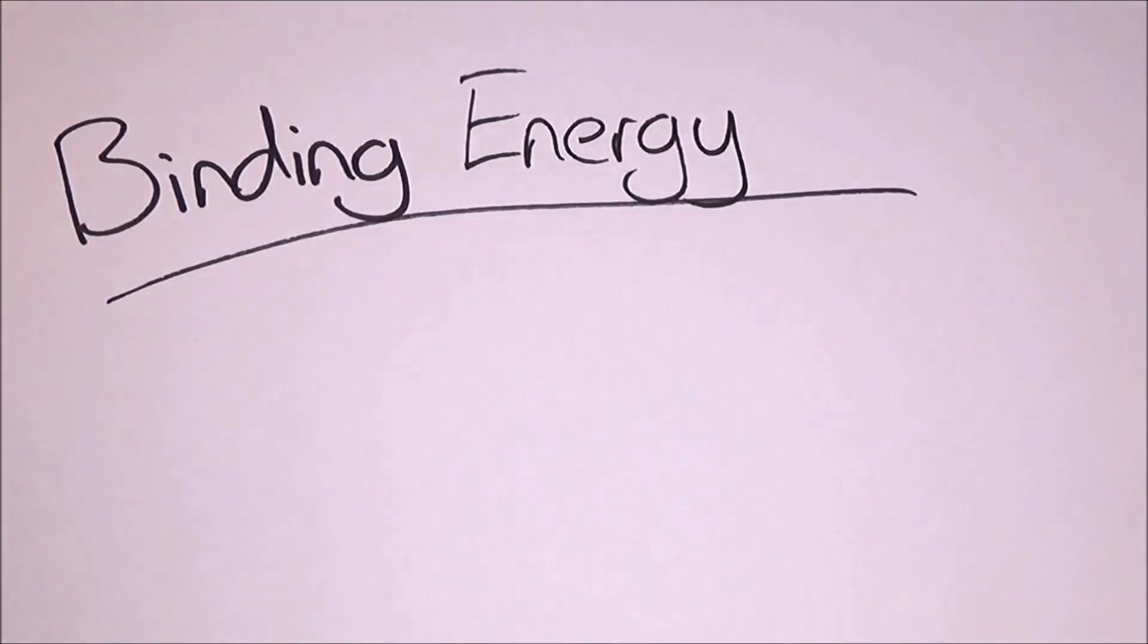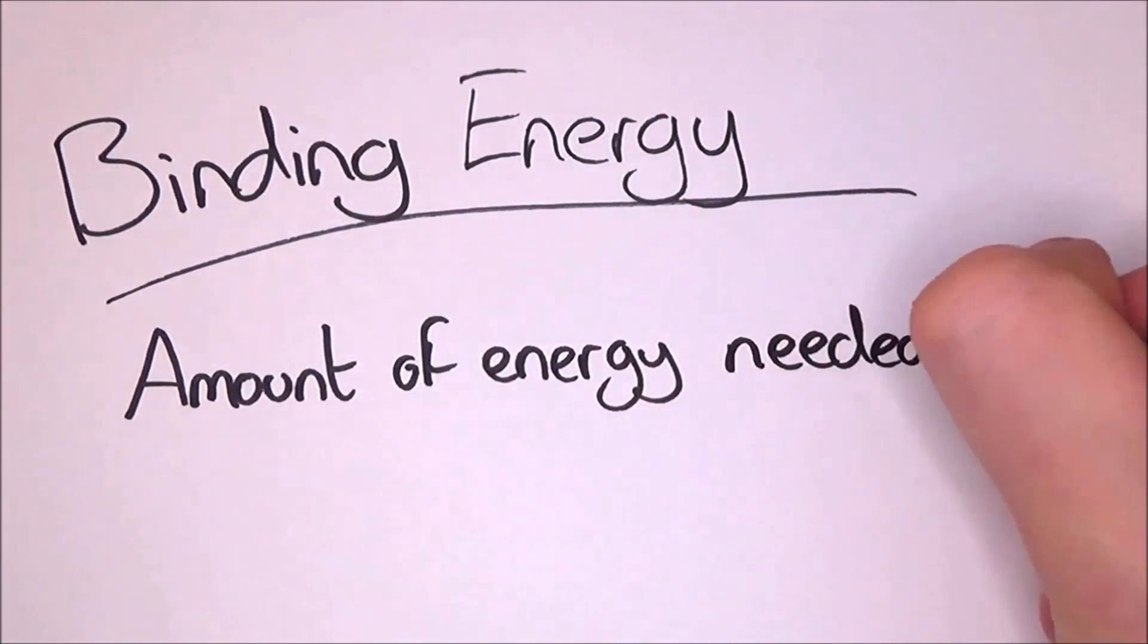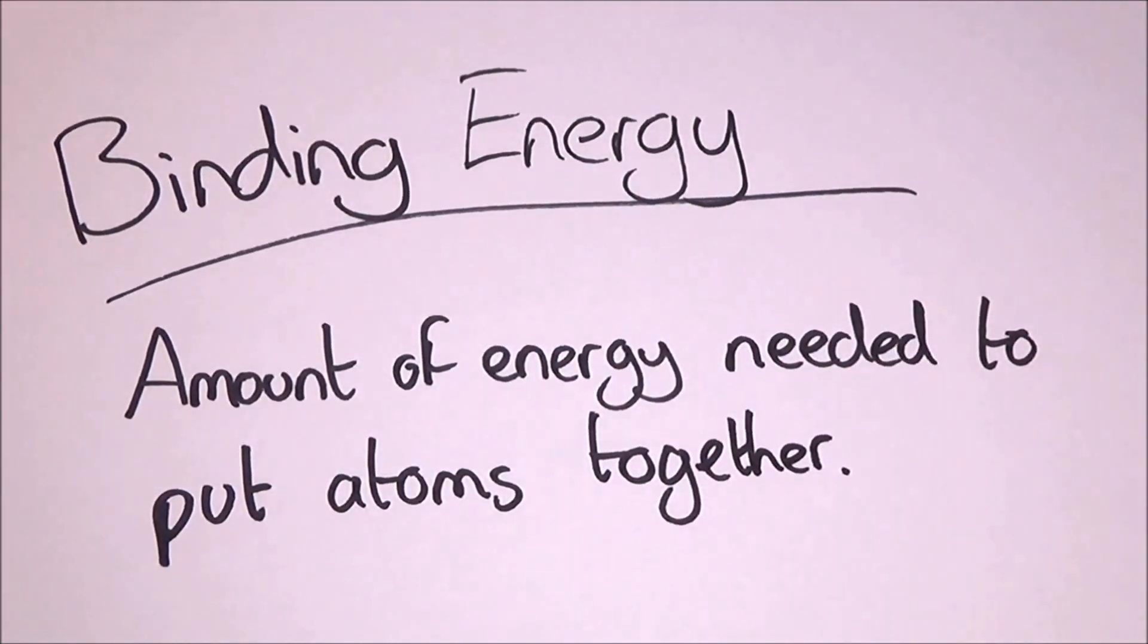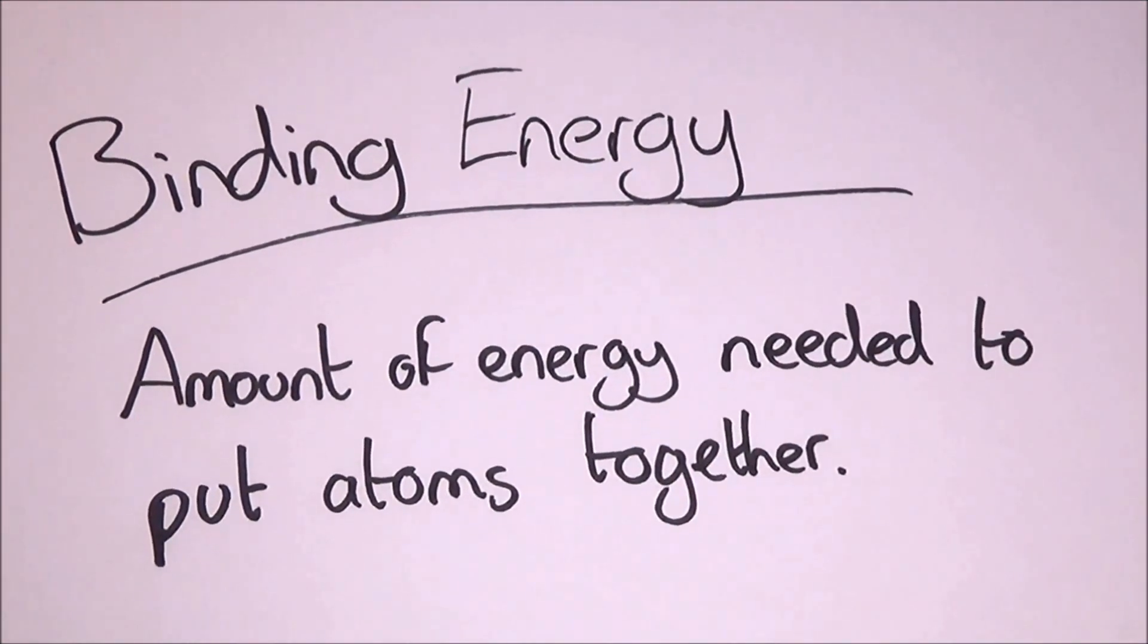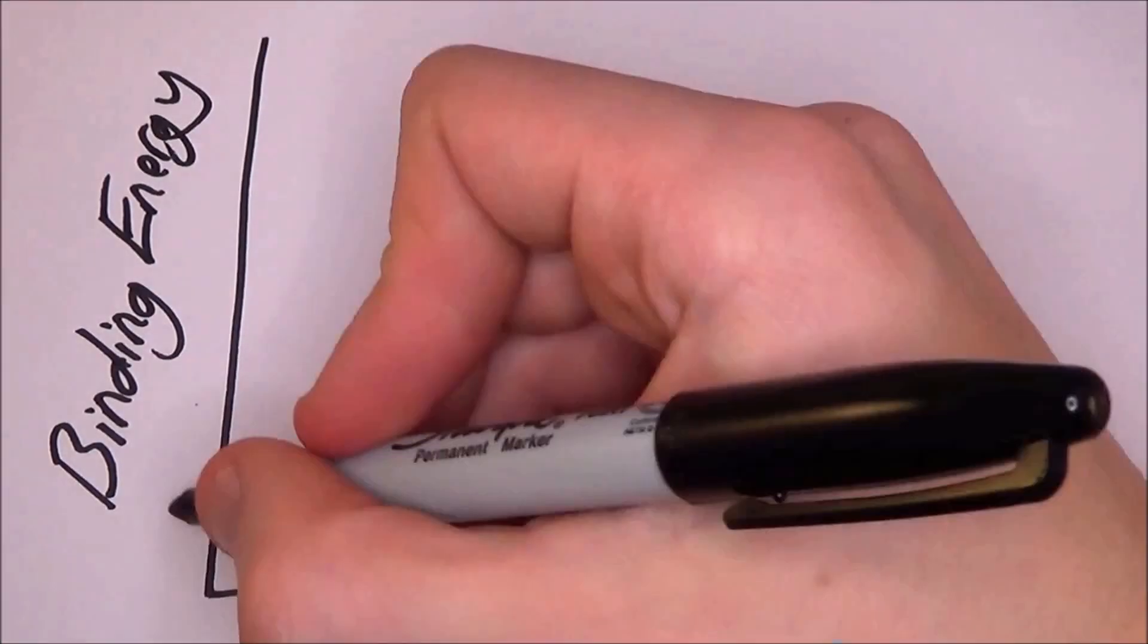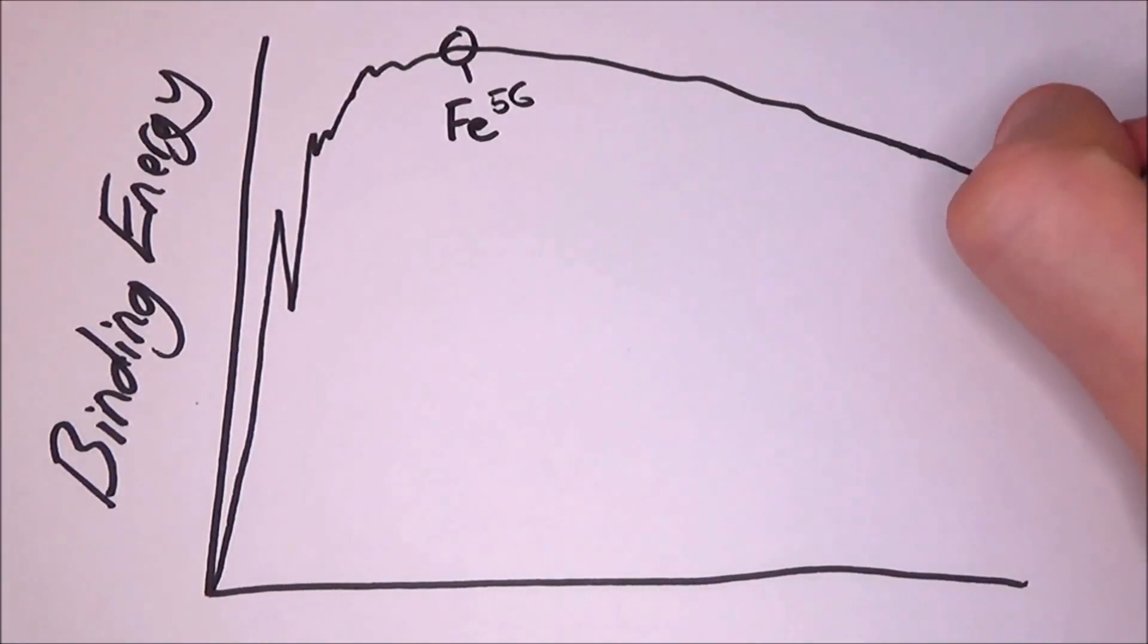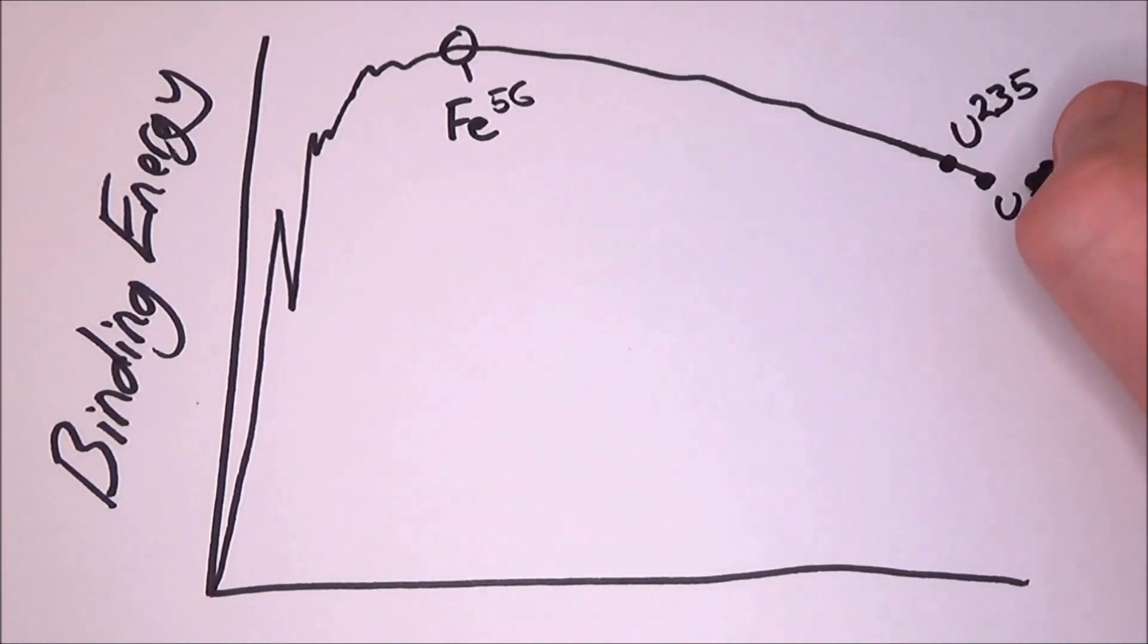Of course, there is maths behind this. We have something we call binding energy. This is the amount of energy it takes to pull an atom apart. So if we have a graph of binding energy, it would look something like this. A steep line that starts to curve out about iron. Then it will continue downwards after that, all the way to somewhere like uranium.